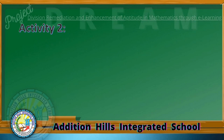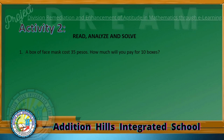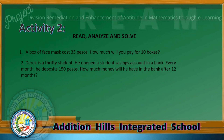Let's proceed to Activity 2: Read, Analyze, and Solve. Problem number 1: A box of face masks costs P35. How much will you pay for 10 boxes? Problem number 2: Derek is a thrifty student. He opened a student savings account in a bank. Every month he deposits P150. How much money will he have in the bank after 12 months?